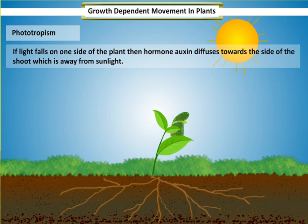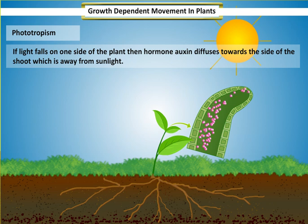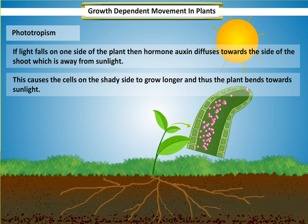The direction of the light determines where the auxin acts. If light falls on one side of the plant, then the hormone auxin diffuses towards the side of the shoot which is away from sunlight. This causes the cells on the shady side to grow longer, and thus the plant bends towards sunlight.